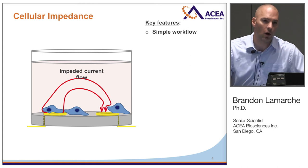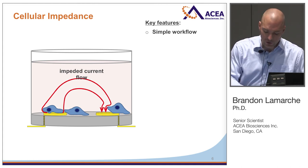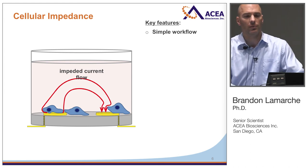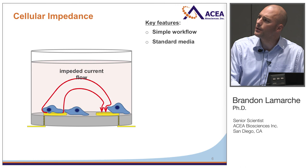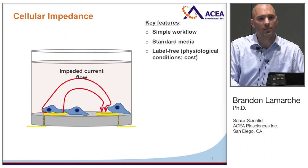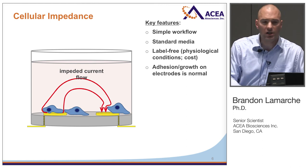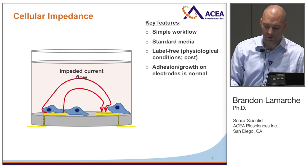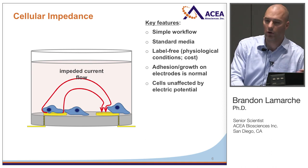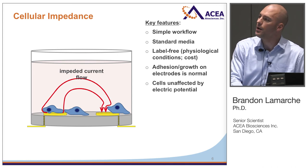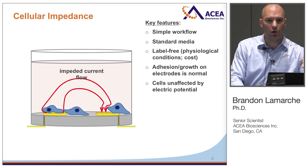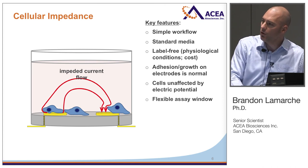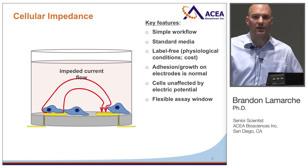The Excelligence system monitors how hard it has to work to maintain a constant current flow. In terms of key features: it's as simple as it could be — add cells to the plate, put the plate in the instrument, and hit start. You can use standard tissue culture media; it's a label-free situation to maintain physiological relevance. Adhesion and growth on these electrodes is normal — side-by-side proliferation assays show no difference from standard tissue culture plastic. The cells are unaffected by the electric potential, which is around 22 millivolts — below the resting potential of voltage-gated channels.